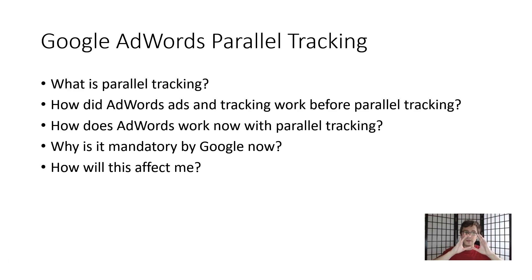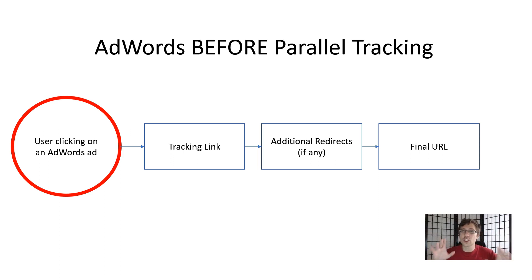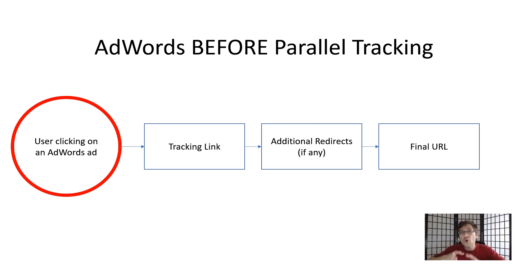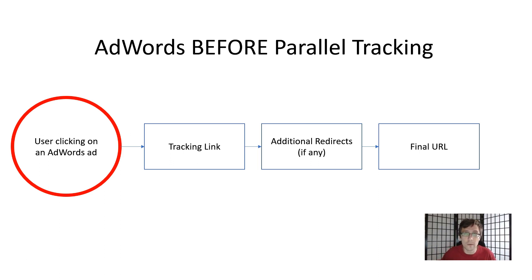This is what Google does now. The way Google had it before: when you added a tracking link in the Google tracking template, people who landed on your ads did not click on the final URL you specified. They would click on your tracking link — that's the whole point, so you could track. They'd click the tracking link, go through some redirects, and finally land on the final URL. This obviously takes time, which is why Google is introducing parallel tracking — to save time.